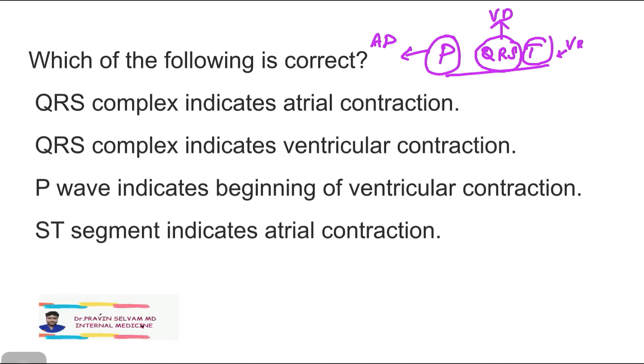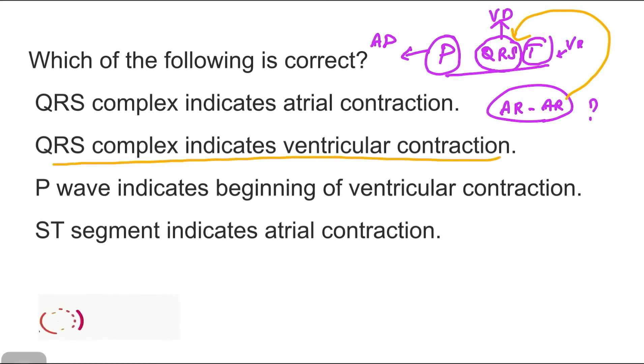Now where is the atrial repolarization or atrial relaxation? This atrial relaxation happens inside the QRS complex. So we will not have a separate wave for atrial repolarization or atrial relaxation. We have to remember that it is merged in the QRS complex. So the right answer is QRS complex indicates ventricular contraction.